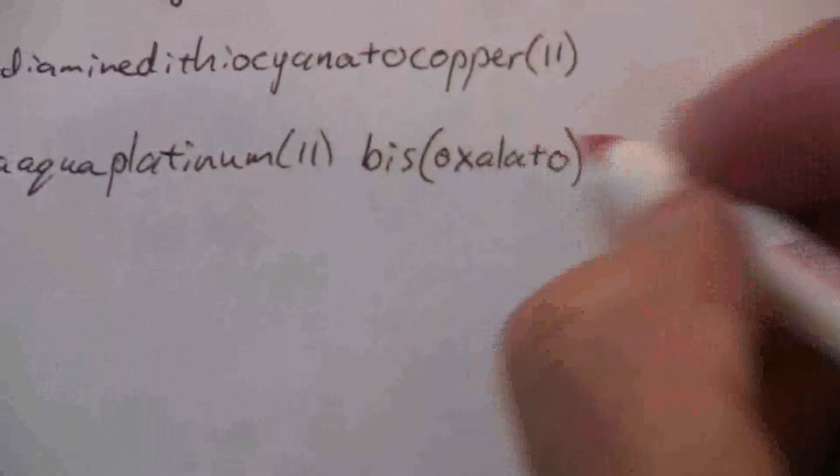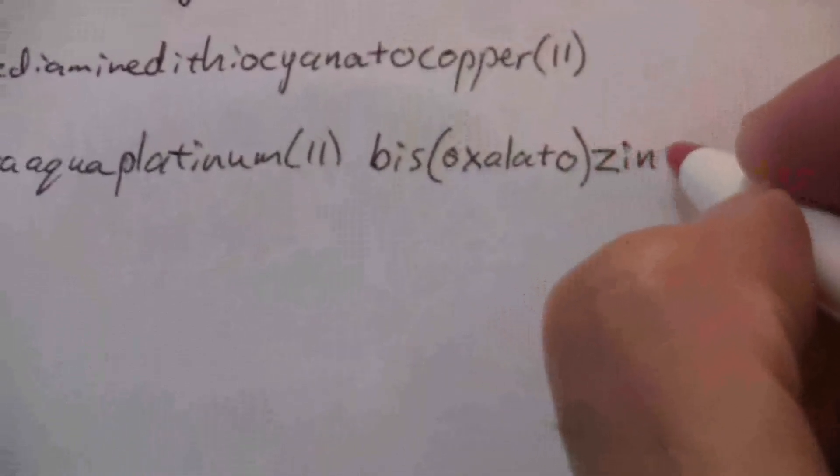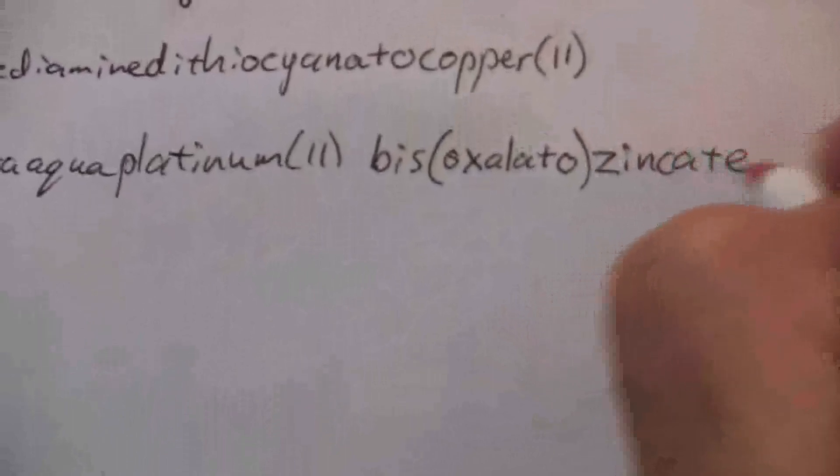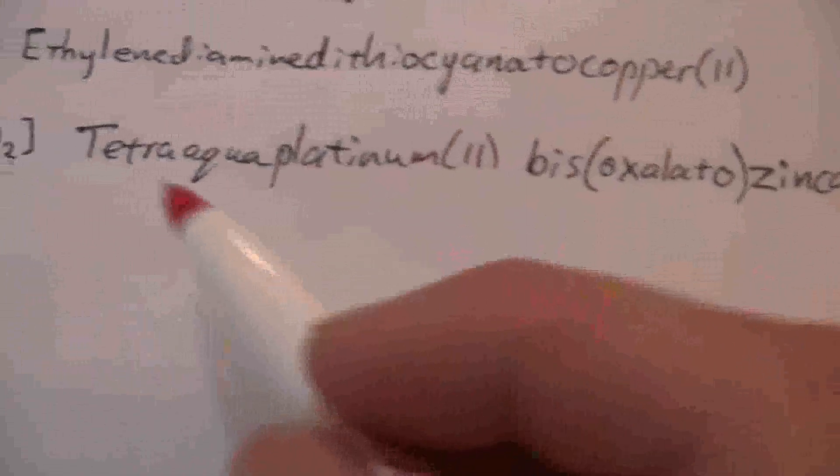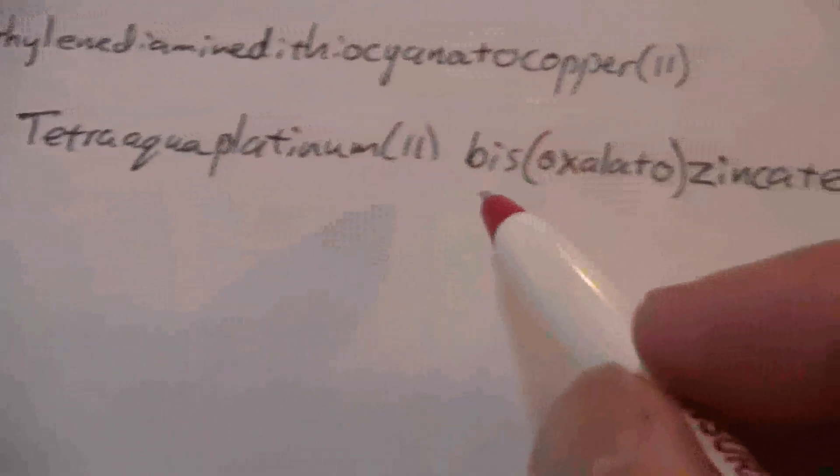Or rather, because this is the anion, it's going to be zincate two. Okay, so tetra aqua platinum two, bis oxalato zincate two.